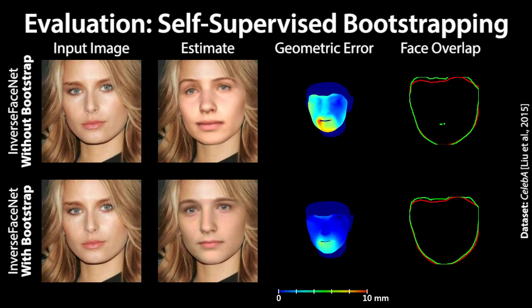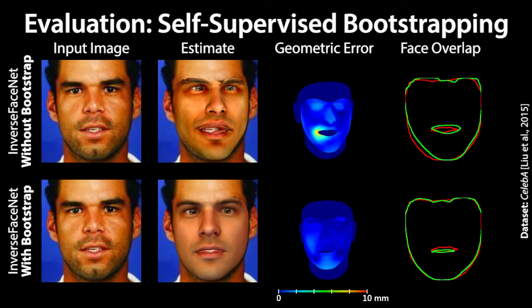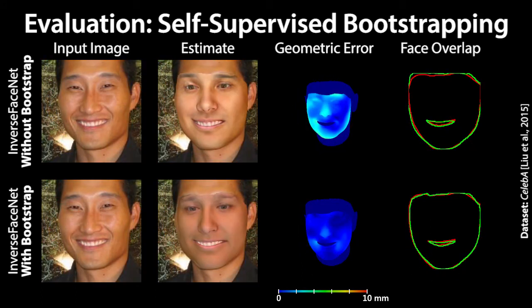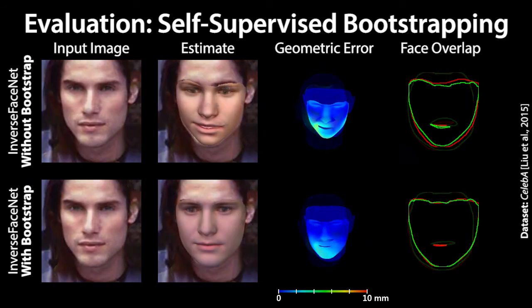We show that our self-supervised bootstrapping process in the network training loop — shown at the bottom — leads to higher quality reconstructions in terms of photometric and geometric errors. Our bootstrapping approach generalizes the distribution of faces that can be reconstructed by our Inverse PhaseNet and also adds support for colored illumination.